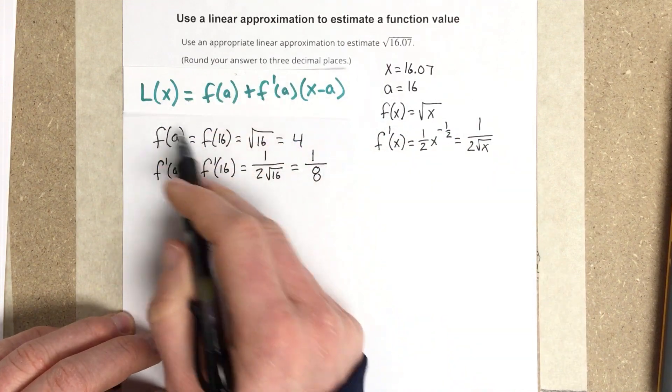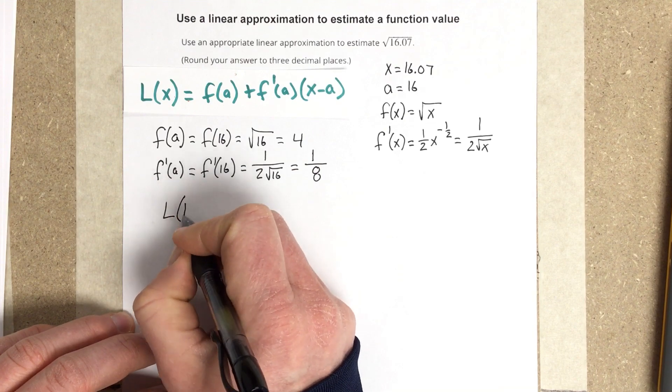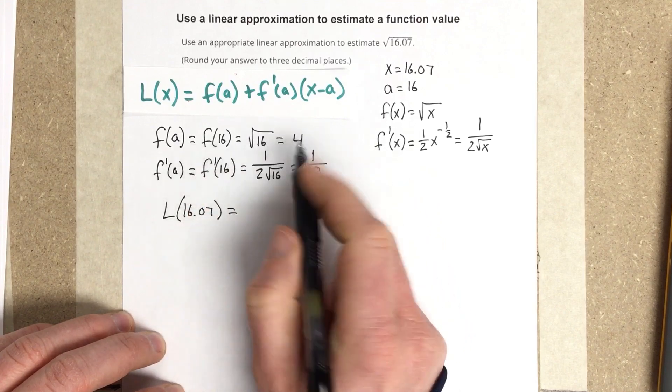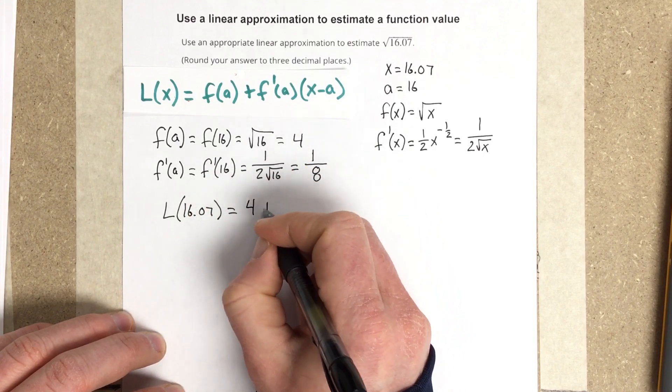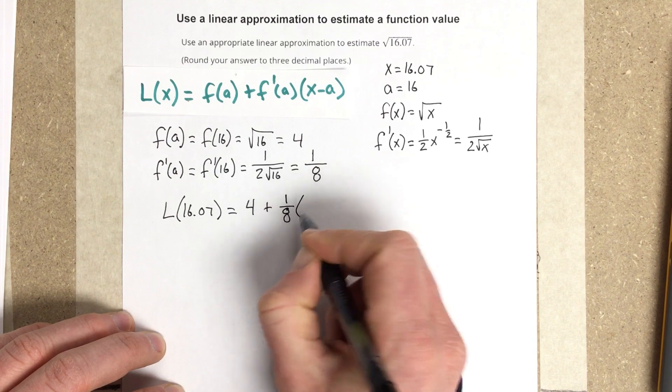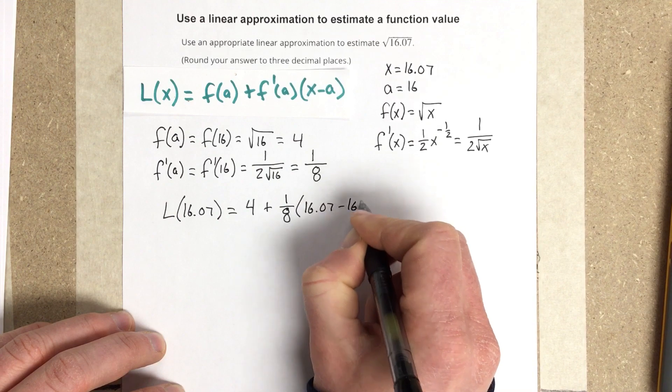And now I can start using this formula, so I can say the linearization of 16.07 is equal to f of a, which I found to be 4, plus 1 eighth for f prime of a, and then I can say that this is 16.07 minus 16 here.